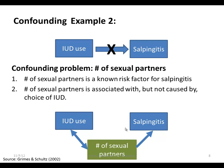However, it turns out that a confounder in this case is number of sexual partners. Number of sexual partners is a known risk factor for salpingitis, and it is associated with — but not caused by — choosing an IUD for contraceptive purposes. So although we see the relationship from IUD use to salpingitis, it's actually the confounder — number of sexual partners — driving it.